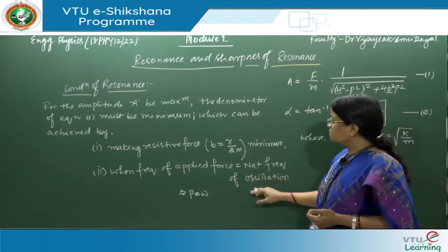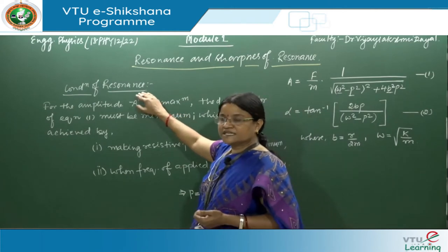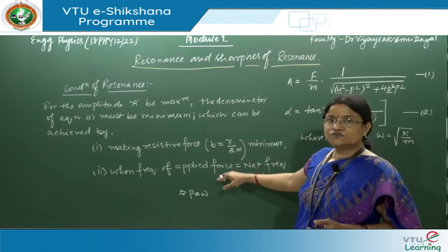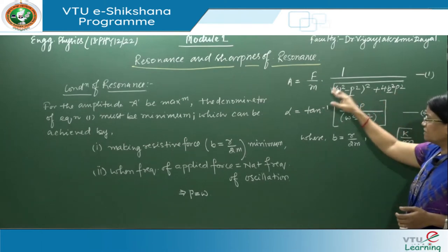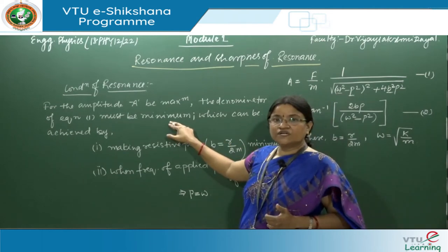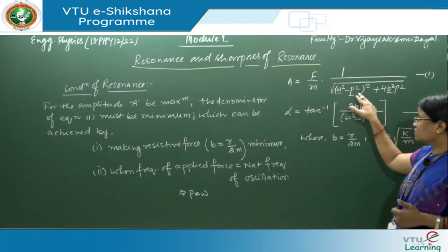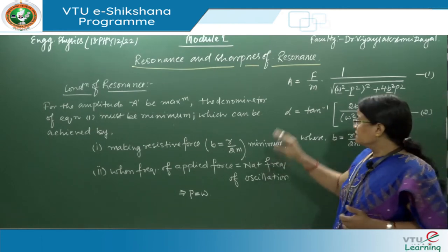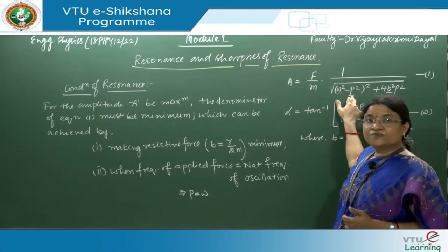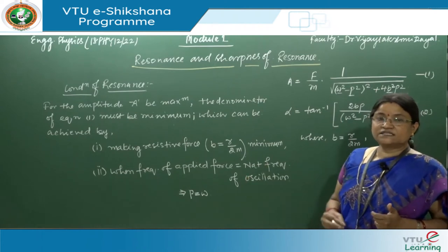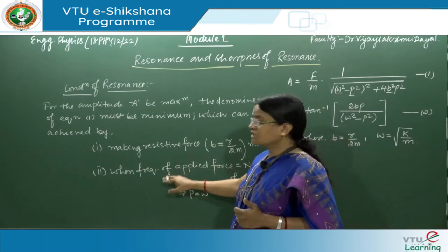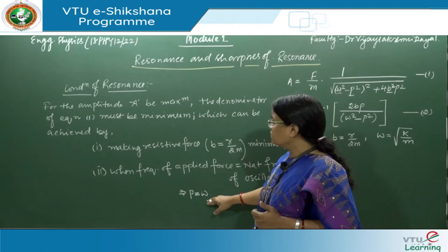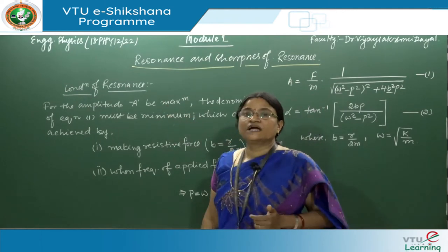If we take these two conditions, the resonance condition is satisfied and we get maximum amplitude at resonance. To prove this, we take the denominator of the amplitude equation to be minimum — that is, the differential of the denominator with respect to p equals zero. We need to prove that b equals r by 2m must be minimum and p must equal omega for amplitude to be maximum at resonance.